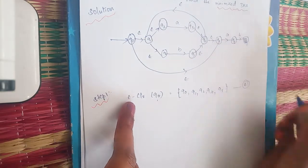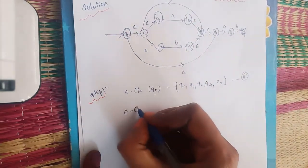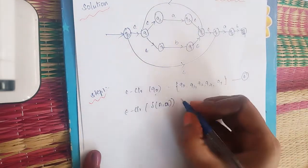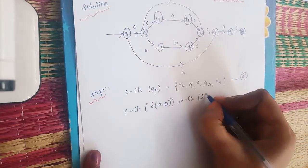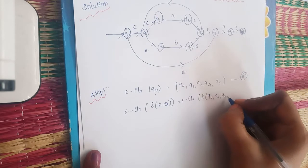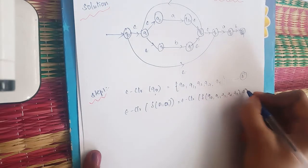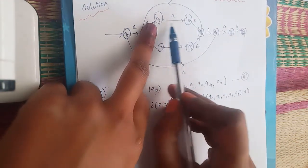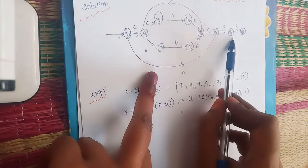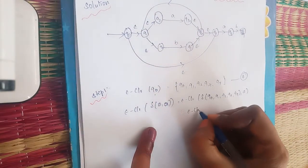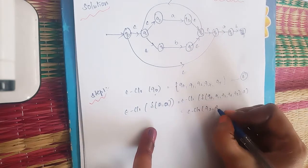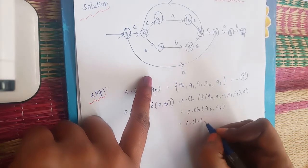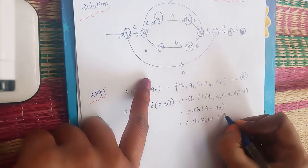State A is {Q0, Q1, Q2, Q4, Q7}. Next we compute E-closure of δ(A, a) — that is, E-closure of δ({Q0, Q1, Q2, Q4, Q7}, a). On input a, Q2 goes to Q3 and Q7 goes to Q8. So we compute E-closure of {Q3, Q8}.